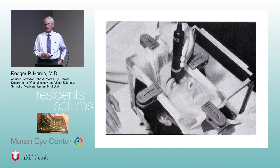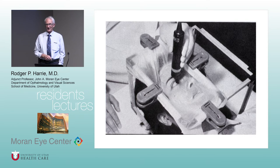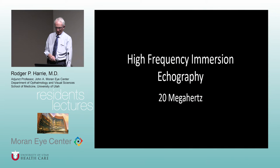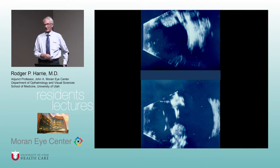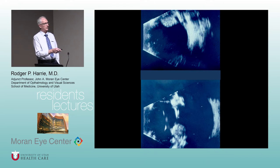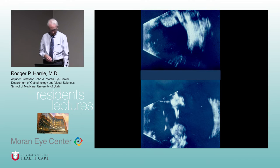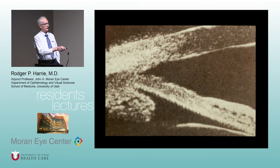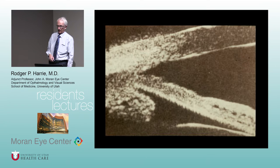UBM — ultrasound biomicroscopy — was quite cumbersome in my days at UCLA. We used to drape the whole face, fill it with water, and put the probe inside — a form of torture. It's much more humane now with little shells and probe covers. The standard probe is 10 MHz; UBM uses 20 MHz or higher. Here's a peripheral tumor view on standard B-scan versus with the immersion shell and 20 MHz probe — you can see the tumor much better. This is a Diktyoma. You get beautiful pictures of the anterior segment: cornea, iris, ciliary body, lens, sulcus.